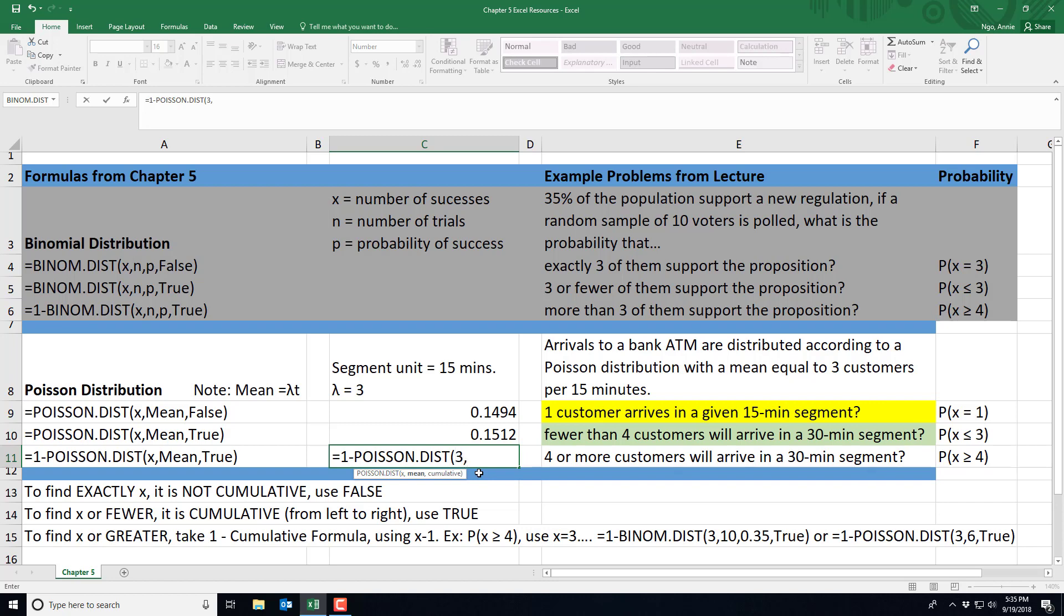Put in my comma. My mean is our lambda t. So the lambda was 3, and our t was our 2 segments because 15 minutes goes into 30 minutes twice. So I type in 6.